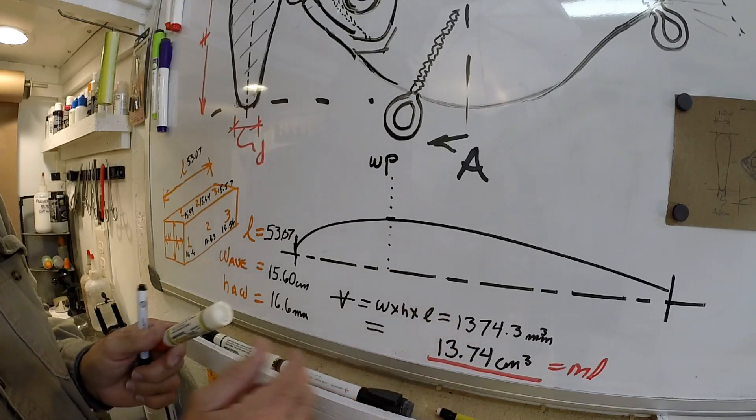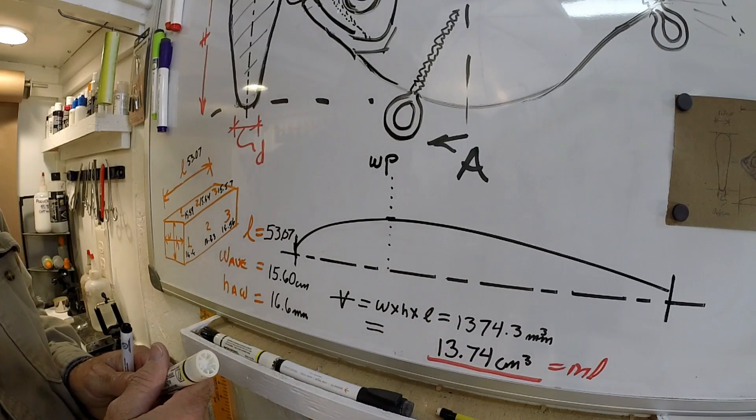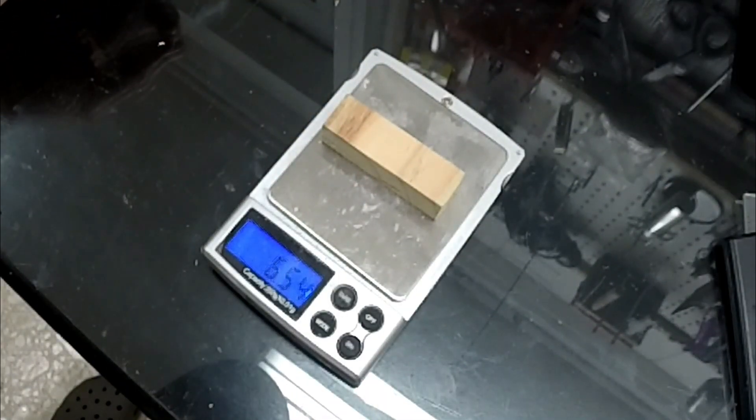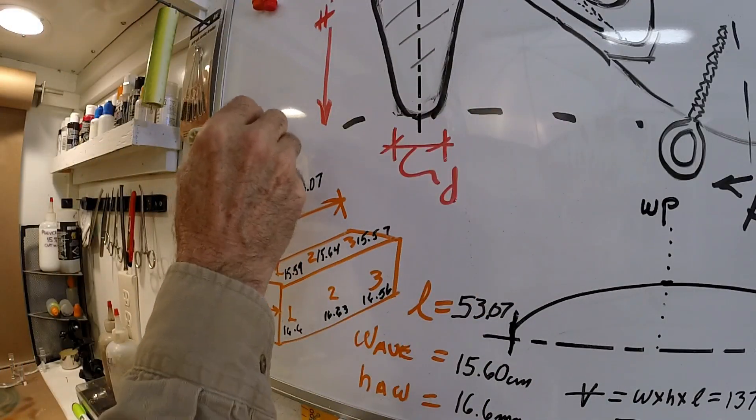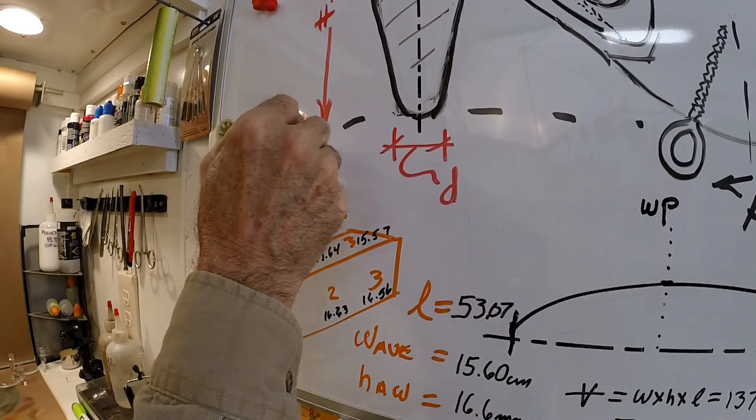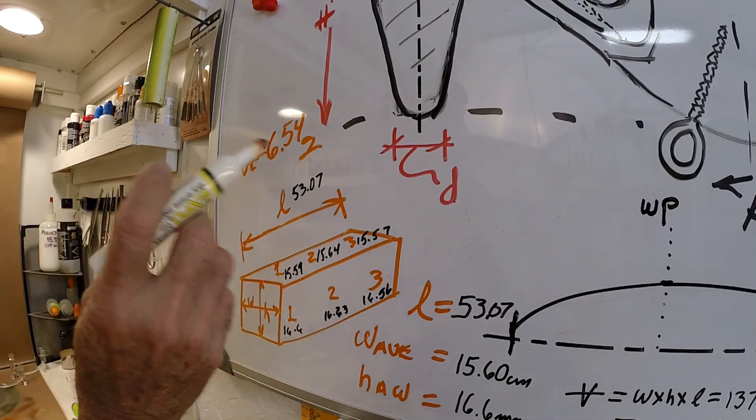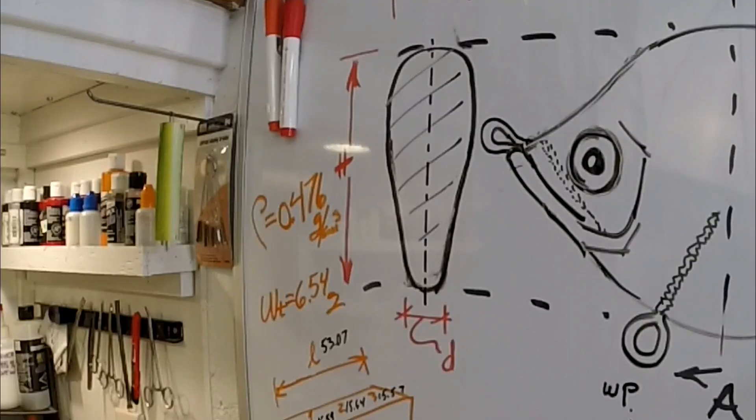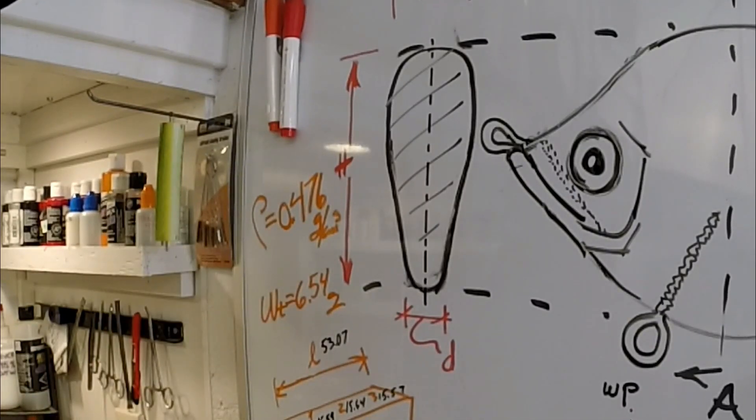So the next thing I need to do is weigh this little piece of wood and then I'll get my density. Okay, weigh this in grams: 6.54 grams. So to get the density you just divide this by the volume which was 13.74. So the density of that wood is 0.476 grams per cubic centimeter. That's gonna come in really handy.